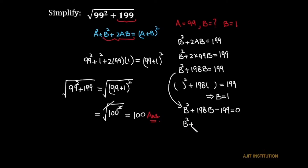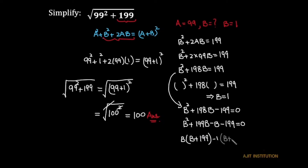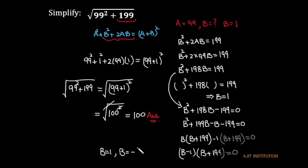Factorizing: b squared plus 199b minus b minus 199 equals 0. Taking b common from the first two terms gives b(b plus 199), and taking minus 1 common from the last two terms gives minus 1(b plus 199). So we get (b plus 199)(b minus 1) equals 0, giving two values: b equals 1 or b equals minus 199.